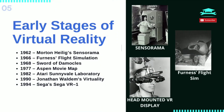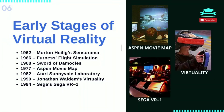Early stages of virtual reality: In 1962, Morten Heilig created the Sensorama, a 3D display, vibrating seat, and scent producer. In 1966, Thomas A. Furness III introduced flight simulation for the U.S. Air Force. In 1968, Ivan Sutherland created the Sword of Damocles, widely considered to be the first VR headset. In 1977, MIT created the Aspen Movie Map, a hypermedia experience that allowed users to take a virtual tour.